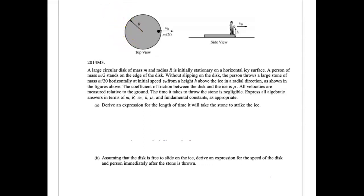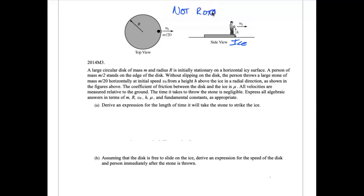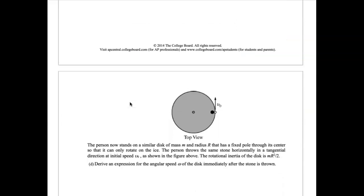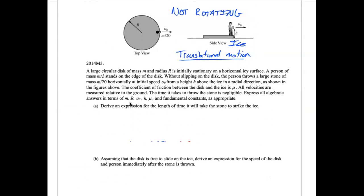Hey, this is Horner, and this is 2014 Mechanics Exam AP Physics C number three. We're going to take a look at what's going on with this person here. The surface this person is on is ice. There's a disc that this person is on, and they're going to throw a ball in one direction, so they go in the opposite direction. Notice that this is not rotating at all — instead, it's going to travel in a straight line, which is translational motion.